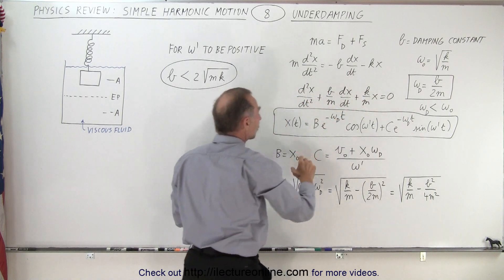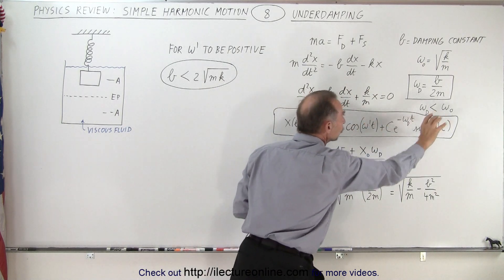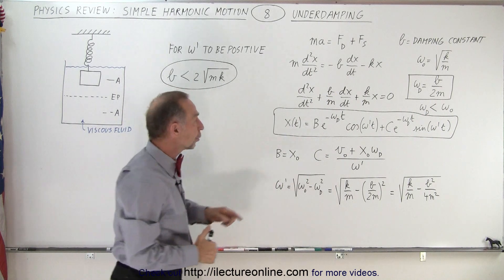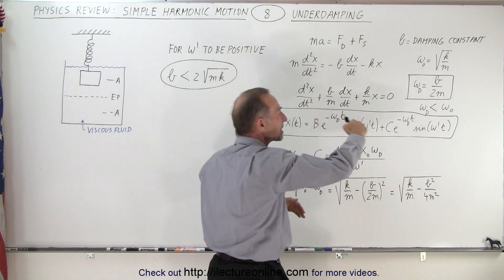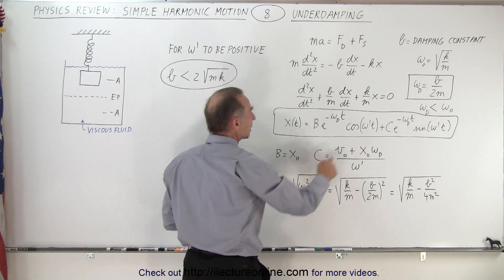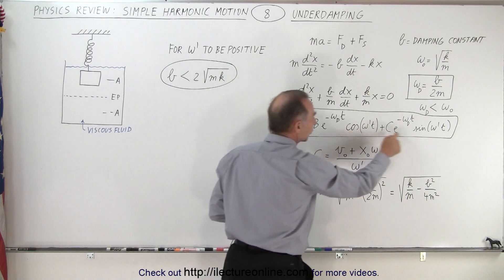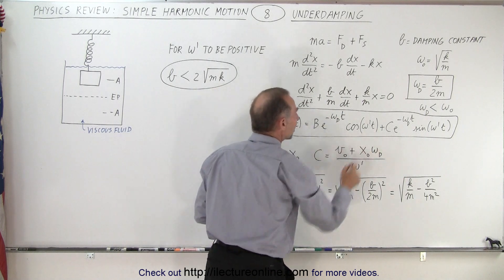You turn that into a differential equation and here's the solution to the differential equation. Notice that these terms right here represent the exponential decay, and here's the oscillation of the cosine function, the oscillation of the sine function, and then we have B and C.